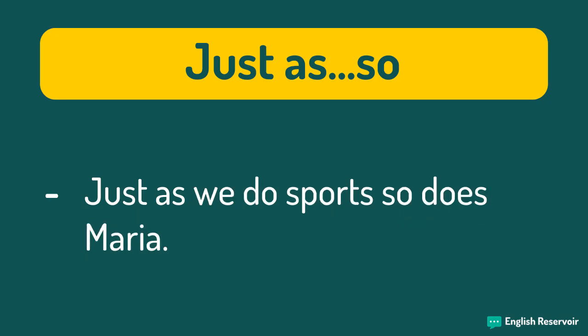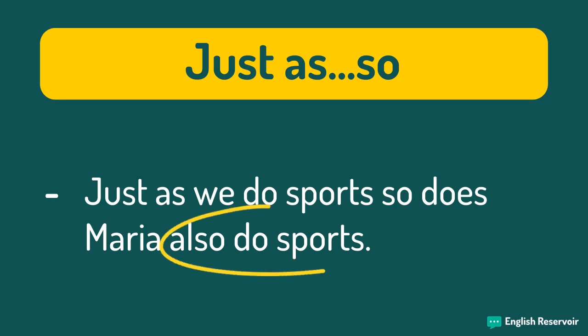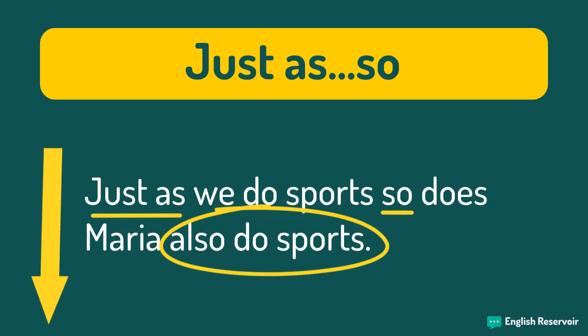'Just as we do sports, so does Maria.' This phrase has the same meaning as 'just as we do sports, so does Maria also do sports.' Here, we do not want to add 'also do sports' because it is redundant. We use 'just as, so' to say that we do sports and Maria also does sports. There is an amazing link in the description that talks all about ellipsis in English, if you'd like to know more.